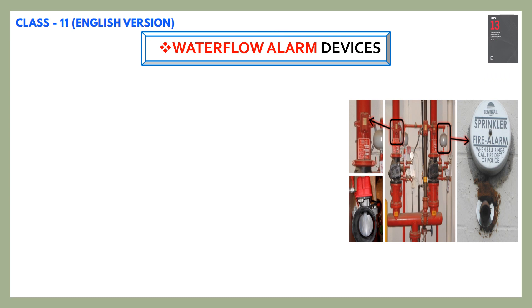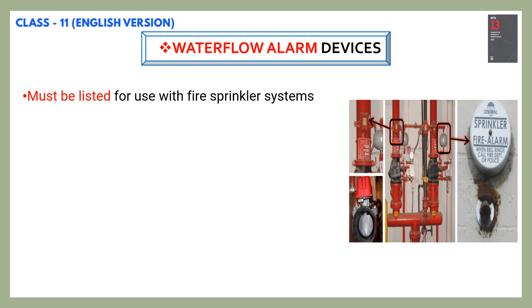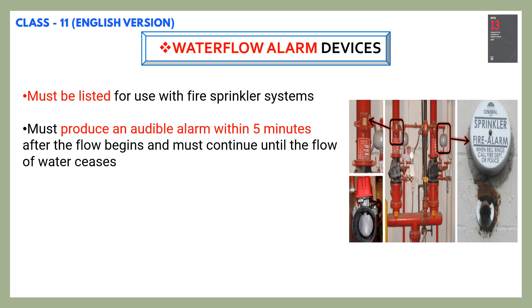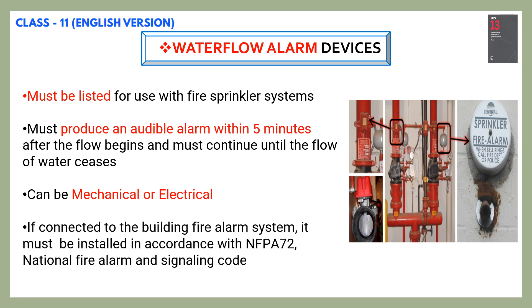Let's go through water flow alarm devices. Water flow alarm devices must be listed for use with fire sprinkler systems. They must produce an audible alarm within 5 minutes after the flow begins and must continue until the flow of water ceases. Water flow alarm devices can be mechanical or electrical. If connected to the building fire alarm system, they must be installed in accordance with NFPA 72, which is the standard for the National Fire Alarm and Signaling Code.